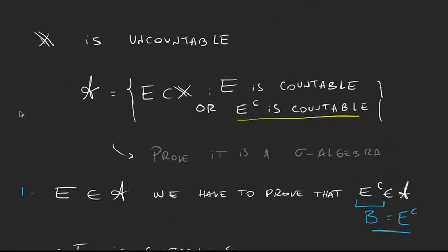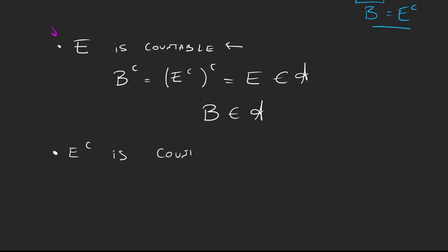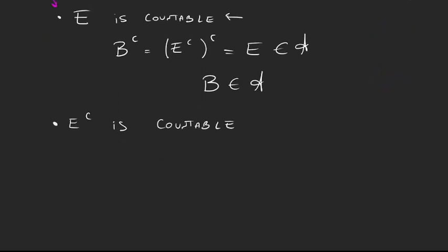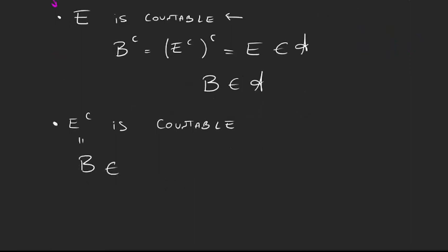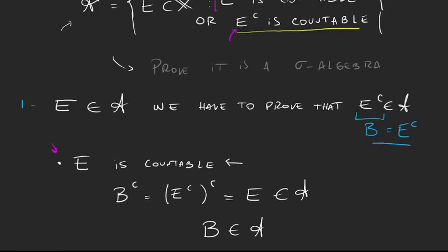We already covered the case where E is countable. Now for the second case, when E complement is countable: E complement is countable, and we said E complement equals B. So then B is countable. And if B is countable, by the definition of A, B belongs to our collection. This completes the first step — our collection A is closed under complements.